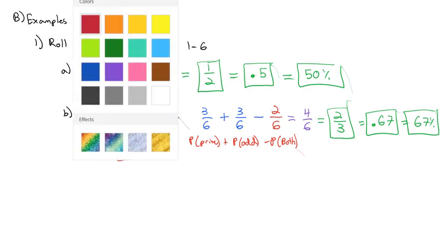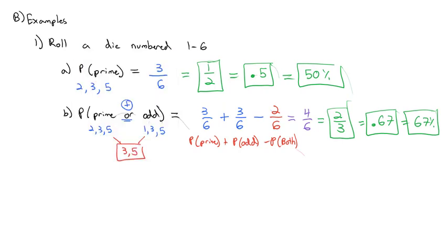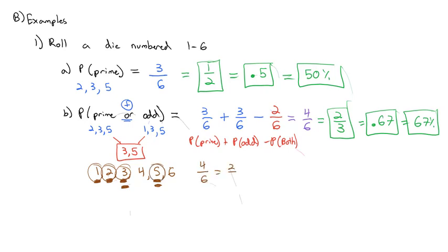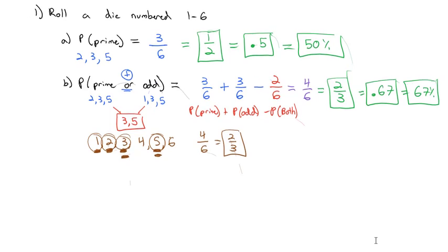Without the formula, we could also work this out using the definition. There are 6 options: 1, 2, 3, 4, 5, and 6. The prime numbers are 2, 3, and 5; the odd numbers are 1, 3, and 5. The ones we want — either prime or odd — are 1, 2, 3, and 5: 4 options out of 6, giving us the same 2/3 using the definition instead of the formula. Two ways to get at the same answer.